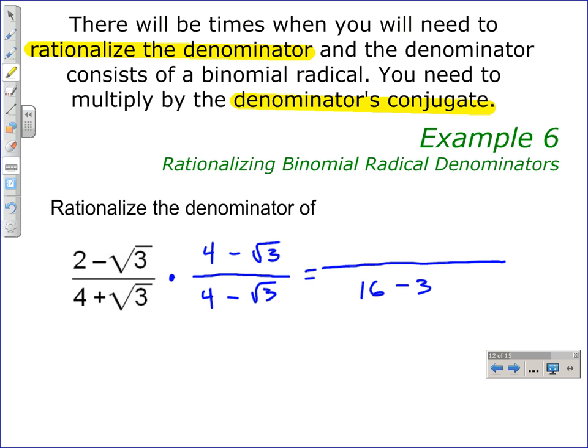Since the expressions in the numerator are not conjugates, we need to FOIL them. 2 times 4 is 8. 2 times minus square root of 3 is minus 2 square roots of 3.